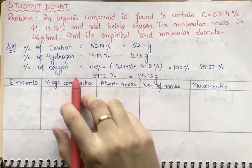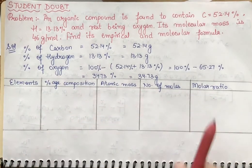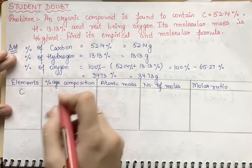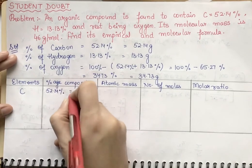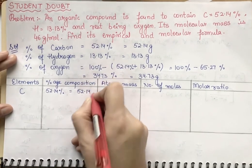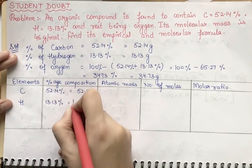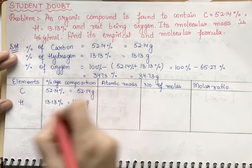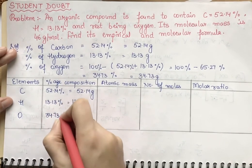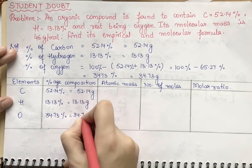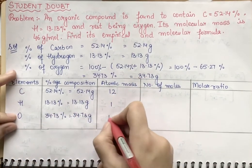Now we draw a table with columns: element, percentage composition, atomic mass, number of moles, and molar ratio. The first element is carbon with 52.14 grams. The second is hydrogen with 13.13 grams. Oxygen is 34.73 grams. The atomic masses are: carbon = 12, hydrogen = 1, oxygen = 16.